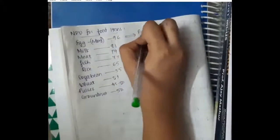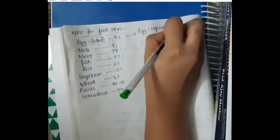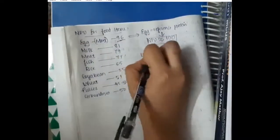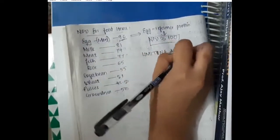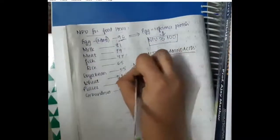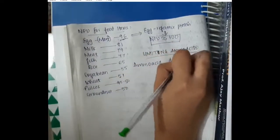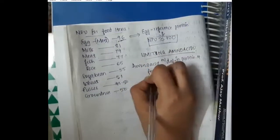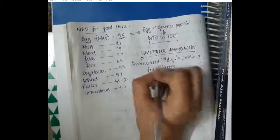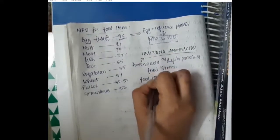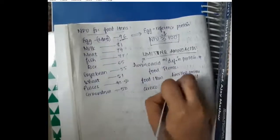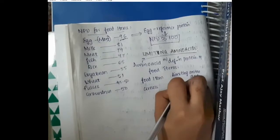What is important here is that egg has the maximum net protein utilization. That is the reason why egg is called the reference protein, and egg's net protein utilization is taken to be approximately equal to 100. Then there is the limiting amino acid concept — amino acids that are most deficient in food items are called limiting amino acids.